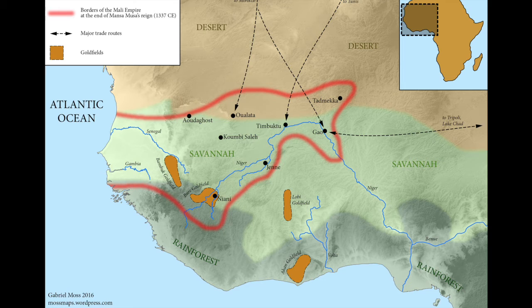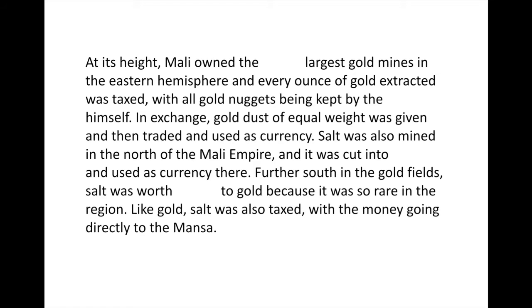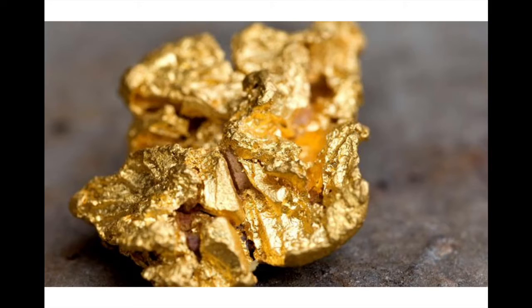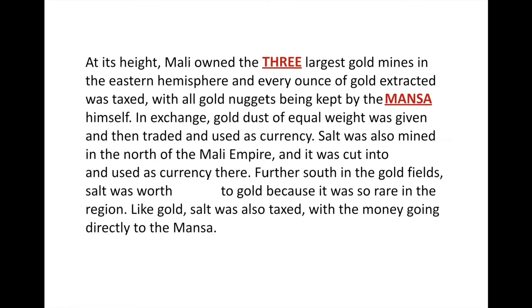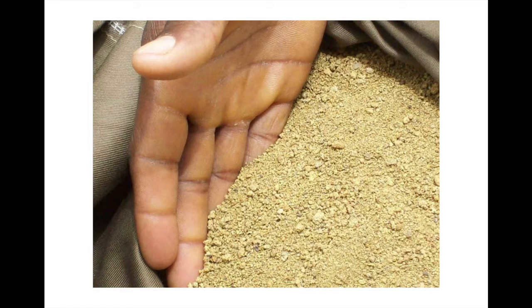At its height, the Mali Empire actually owned the three largest gold mines in the entire Eastern Hemisphere — the biggest sources of gold known to Europeans and Asians were in the Mali Empire. Every ounce of gold extracted was taxed. All gold nuggets were kept by the Mansa himself, and in exchange, gold dust of equal weight was given back and used as currency. So if you had a gold nugget weighing a pound, you'd turn it in and receive a pound of gold dust.